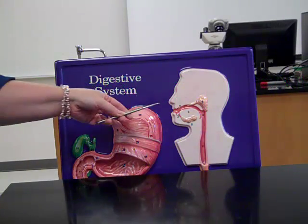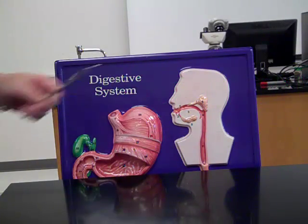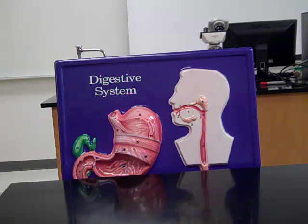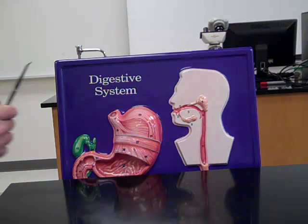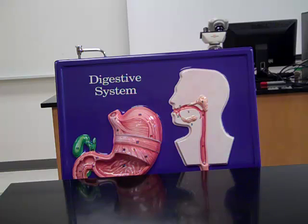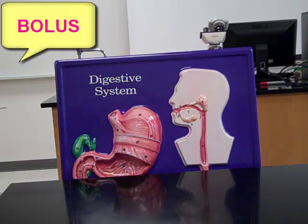We start with food in our mouth. The mouth begins mechanical digestion with the teeth grinding the food. We also add saliva from the salivary glands, which begins chemical digestion with amylase — the enzyme that starts to digest starch. Once we have chewed up the food, it becomes slick with saliva and we call it the bolus.